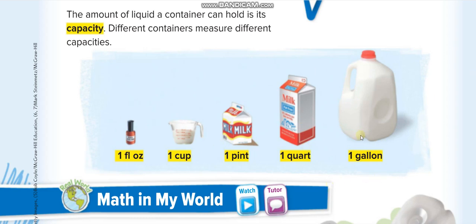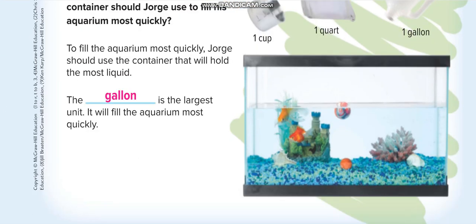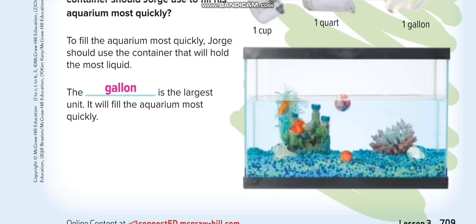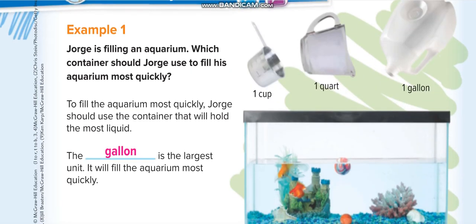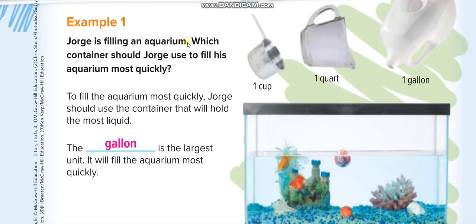Let's see the first example. George is filling an aquarium. Which container should George use to fill his aquarium most quickly? How can we fill this aquarium most quickly: with a cup, with a quart, or with a gallon? Of course, with a gallon he can fill his aquarium more quickly.